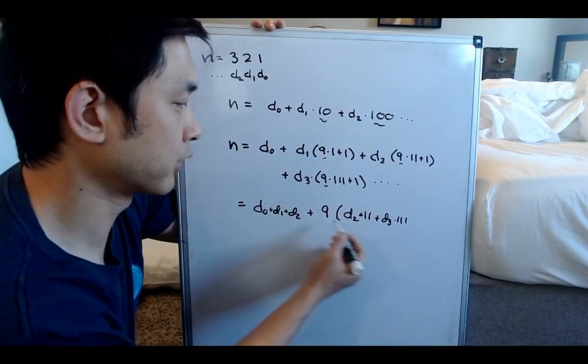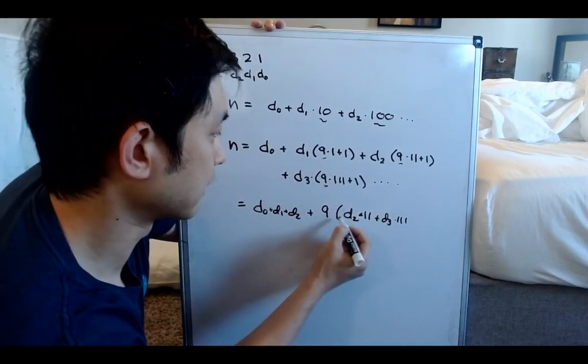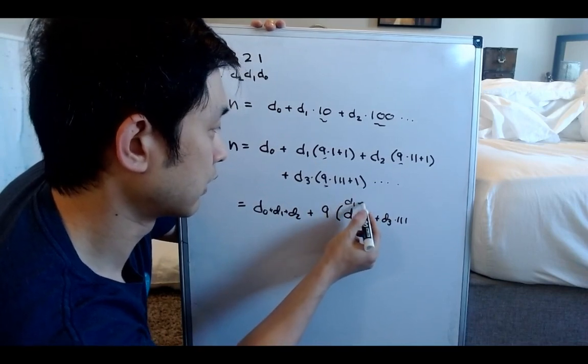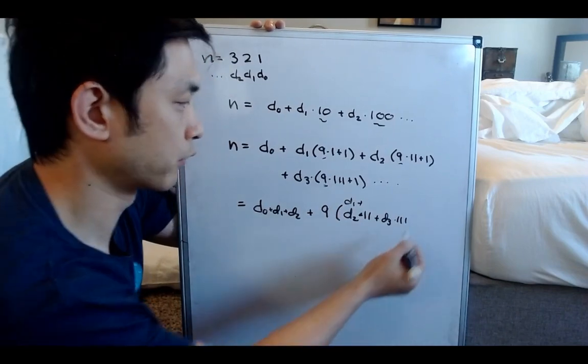So that's nice, and everything else would be 9 plus, I hope I got this right, with times 1, so it's like, I think D1's actually in here, D1 plus D2 times 11, D3 times 111, and so on and so forth.